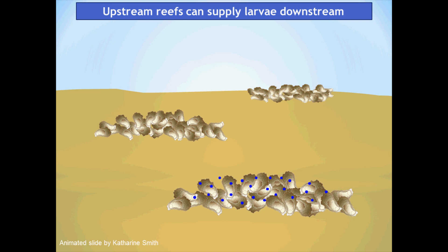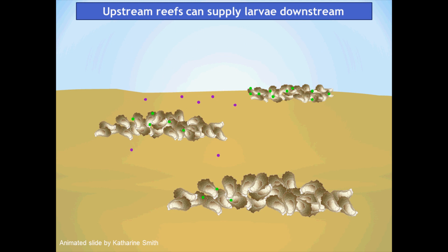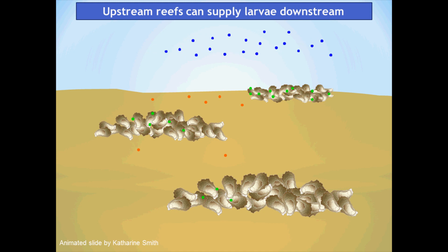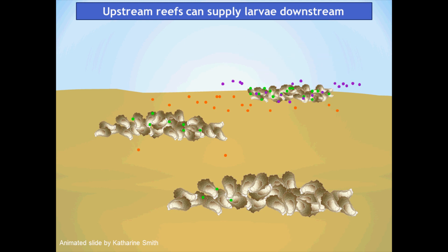We also know that upstream reefs can supply larvae to downstream reefs. The upstream reef spawns, and the larvae are carried by the tides downstream. Some settle back on the original reef, but most settle on the reefs downstream. The next reef spawns and a few larvae return, but most go to the downstream reefs. The downstream reef spawns and most larvae are carried away, with only a few settling back. So it's the upstream reef that actually has the highest transport success — the highest success of larvae being transported to another reef.